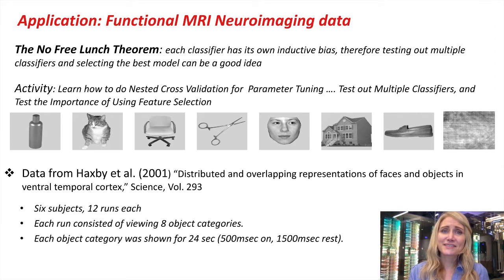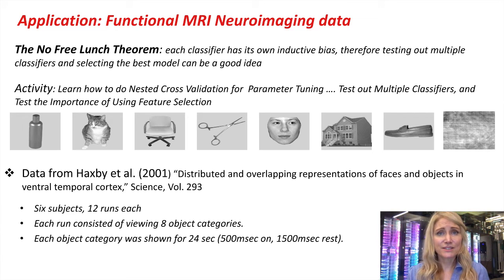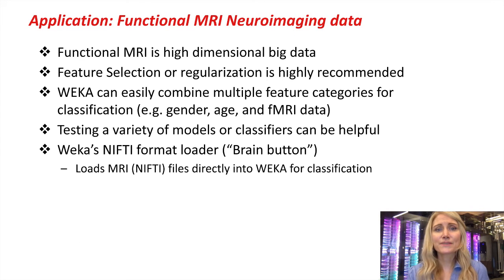In the exercise that follows, you'll be able to test out a few different classifiers using the classic Haxby et al. dataset. In this 2001 study, functional MRI data was collected while subjects viewed images from eight different object categories. You'll also get to test out a few different methods for feature selection as well as parameter tuning using nested cross-validation.